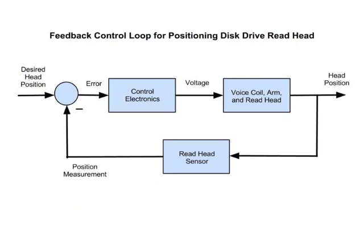Let's now go through the feedback control loop for positioning the disk drive read head. We'll start with the desired head position, which is a signal sent from the computer to the disk drive controller. The desired head position is compared to a position measurement, which comes from the read head itself.